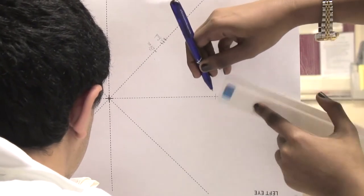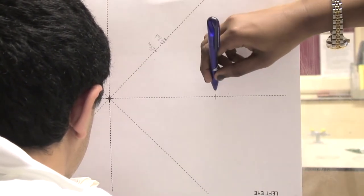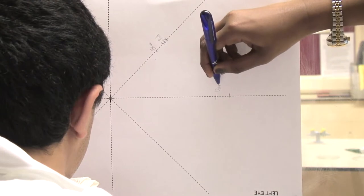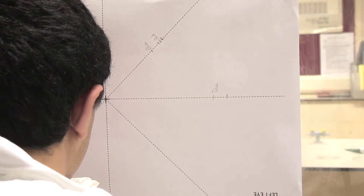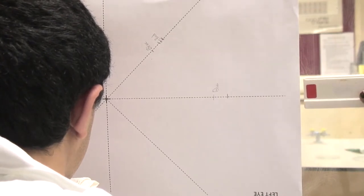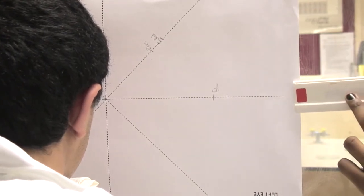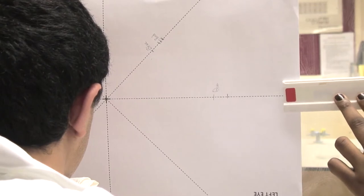Say something short like, I see it, so your partner can mark your field of view on the line. When you then say what color you see, they will mark that point as well. Only say the color when you are sure what color it is.